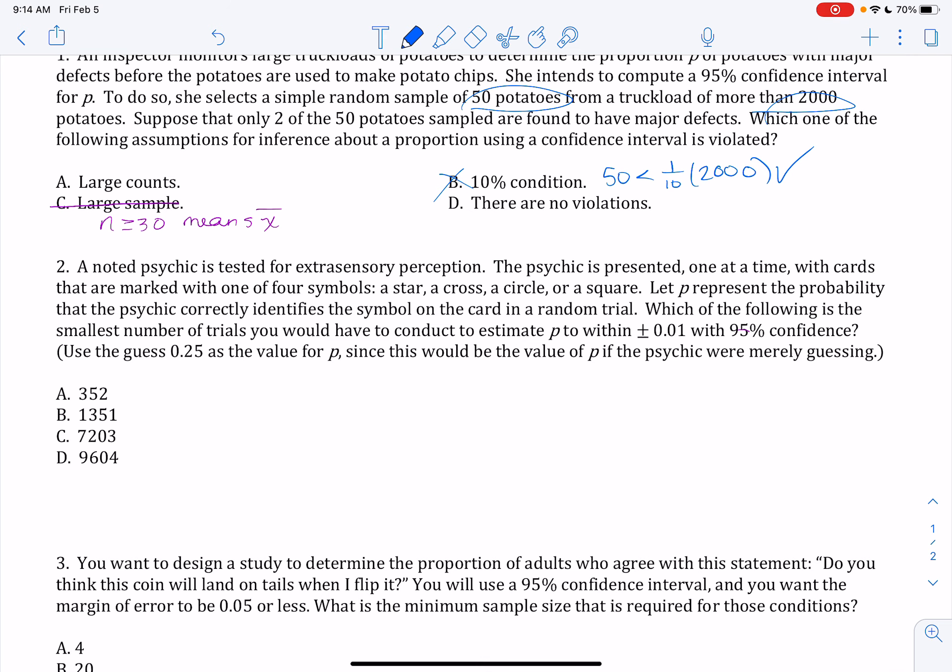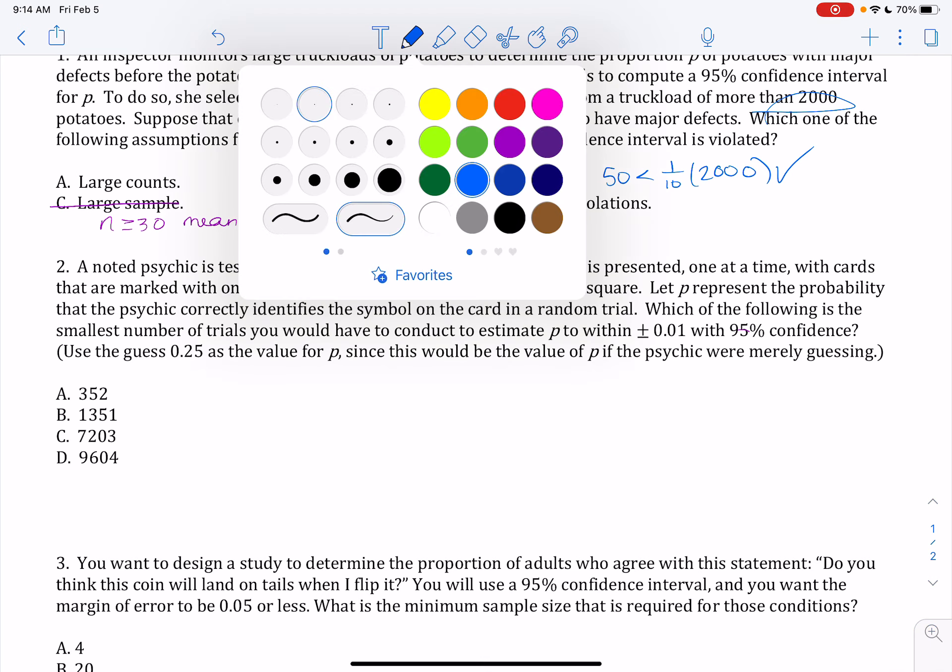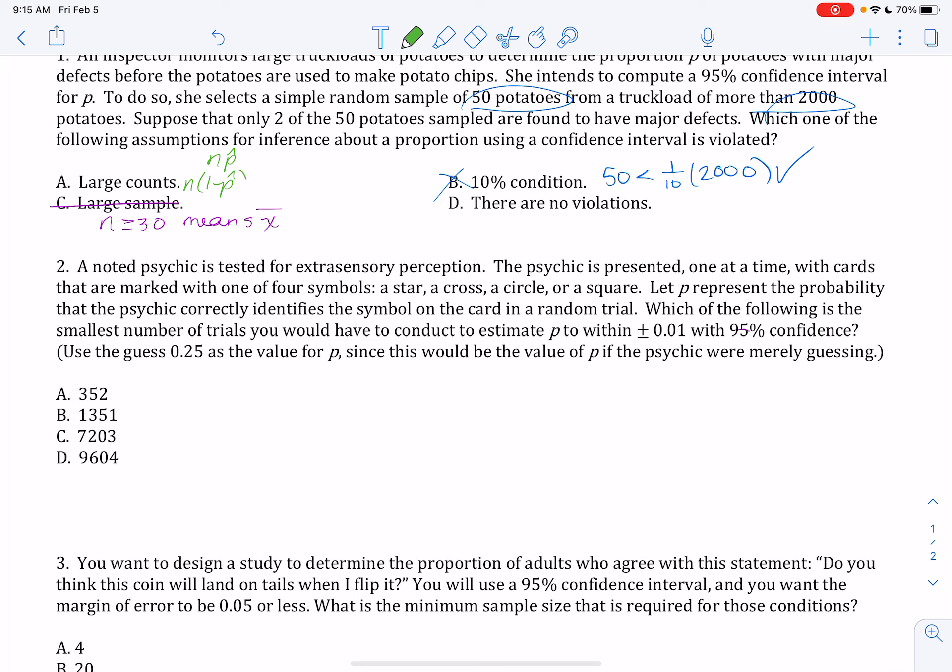Lastly, we need to check large counts. Is it true that n times p hat and n times 1 minus p hat are both at least 10? In this case, 50 gets multiplied by 2 out of 50, which is only 2, which does not meet our requirement of being at least 10. So large counts is the condition that is violated.